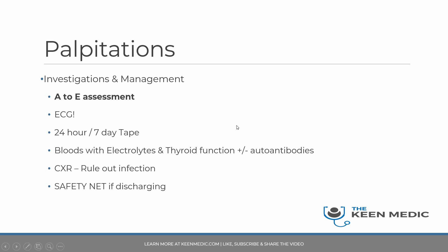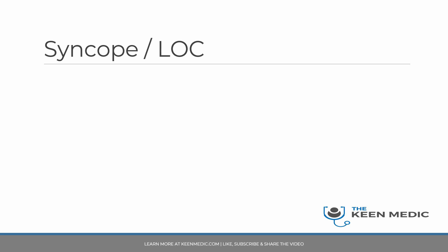Lastly, loss of consciousness or syncope — this is something many people fear. With the history, you need to think about the setting: when are they having these episodes, is it an isolated episode or recurrent, and what are they doing and where are they when the episode occurs? They may be lying in bed, sitting, standing, walking, or doing absolutely nothing. The setting is vital.